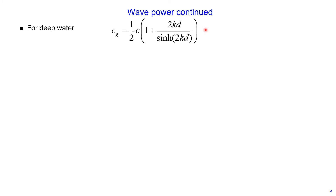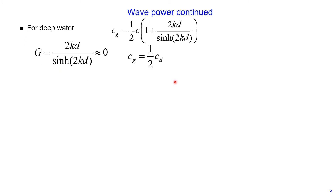For deep water, the group velocity simplifies because G is approximately equal to 0 for large water depth. Therefore, group velocity equals half of the wave speed. The wave power for deep water is then equal to 1/16 multiplied by specific weight, multiplied by wave height squared, multiplied by wave speed for deep water. In deep water, the rate at which energy is transmitted is half of the wave speed.